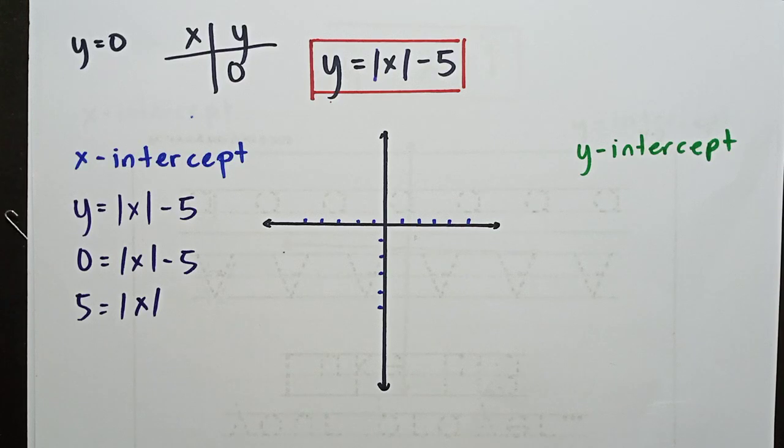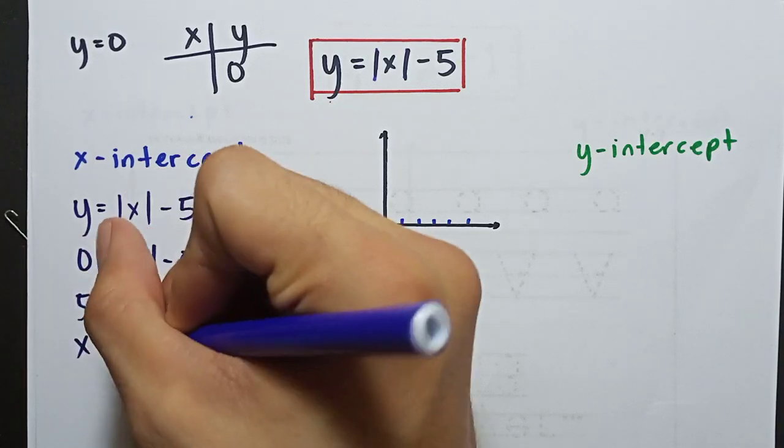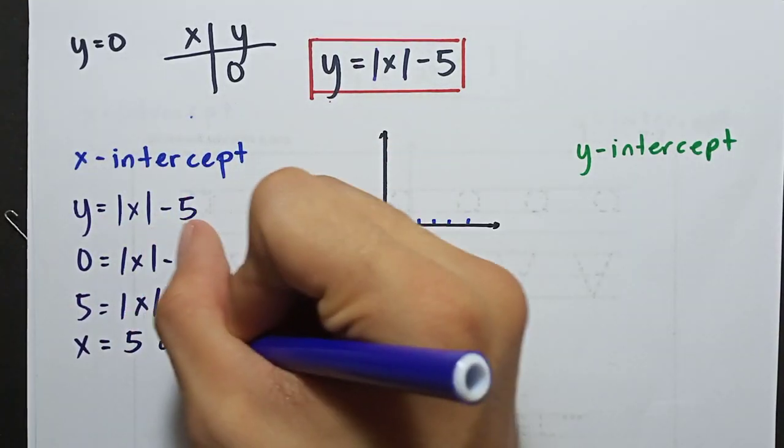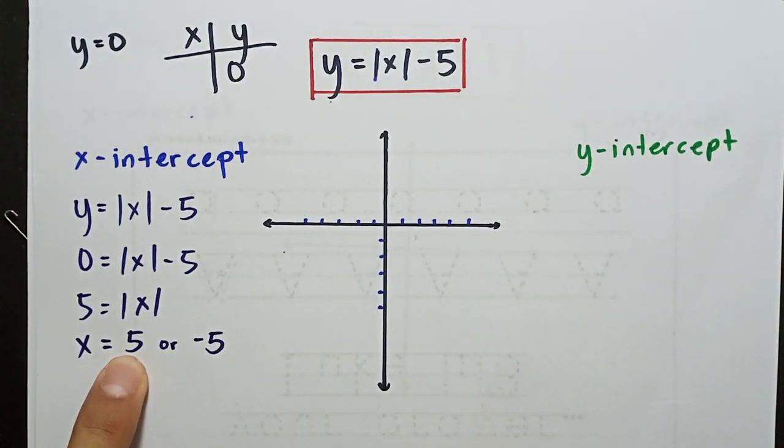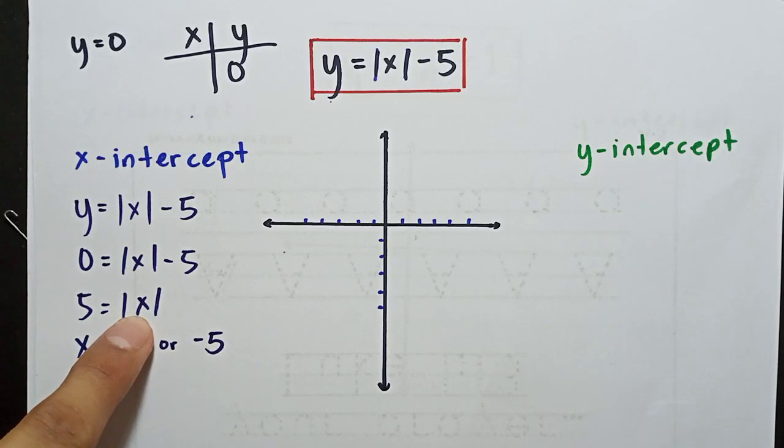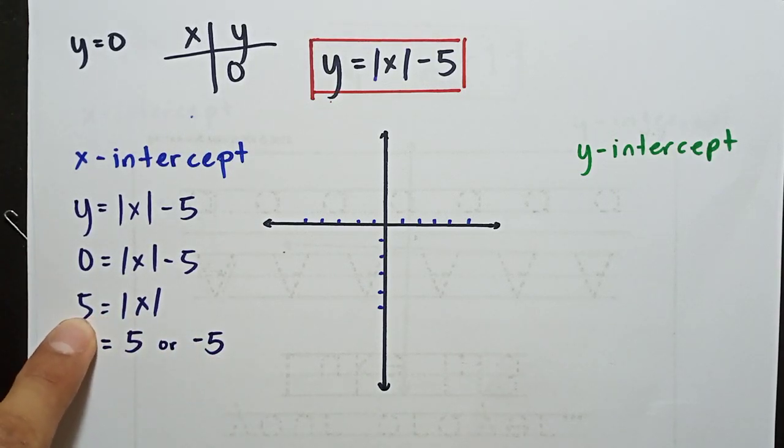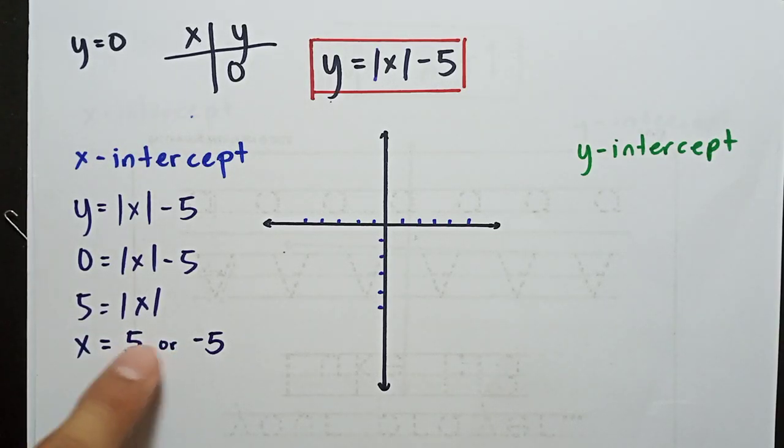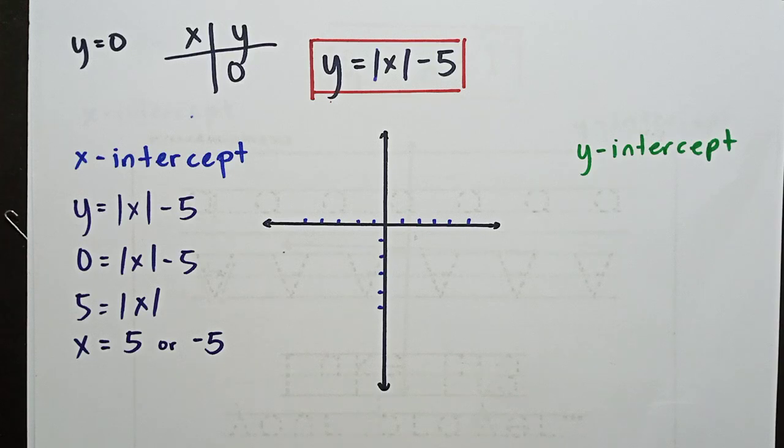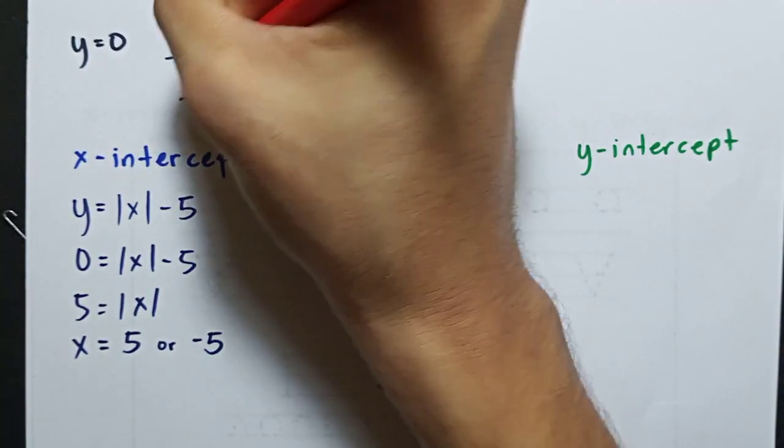And remember, with absolute value, regardless of the sign of your number, it will always be positive. That's why it's called absolute value. Absolute value is always positive. So when we analyze it, our x will be equal to 5 or negative 5. Why? Because obviously, 5 is equal to 5, right? But why negative 5? Because when you have absolute value, even if it's negative 5, the output value is positive. So you can have positive and negative in absolute value. Because regardless, your answer will still be positive. So our value for x, when y is equal to 0, is 5 or negative 5.